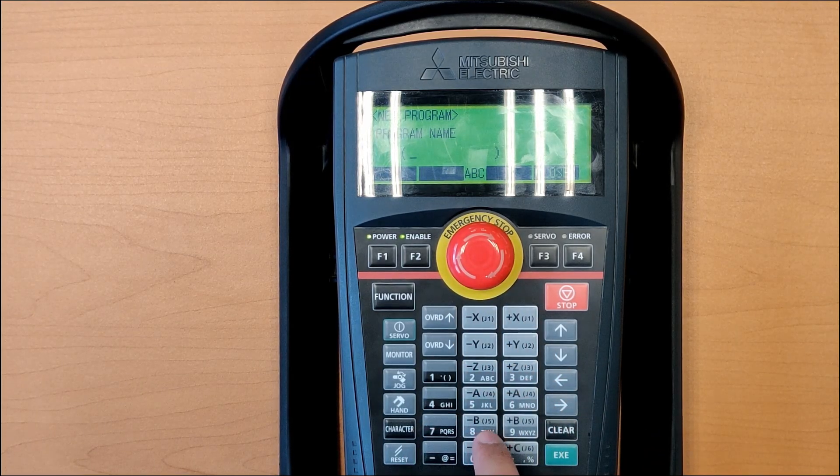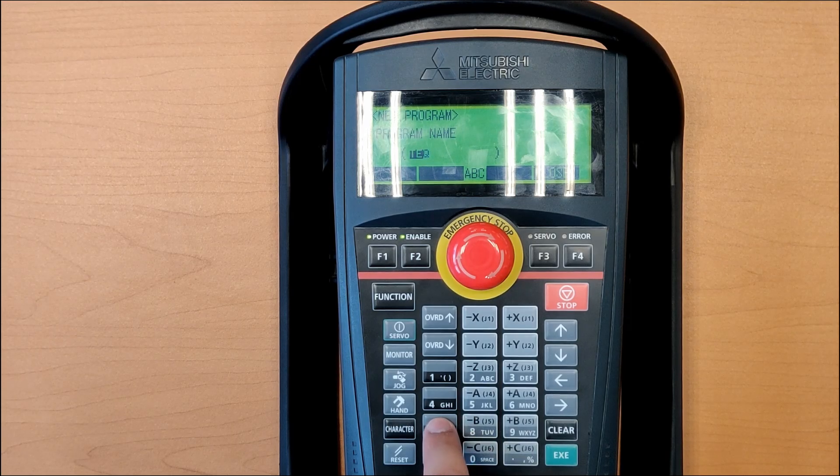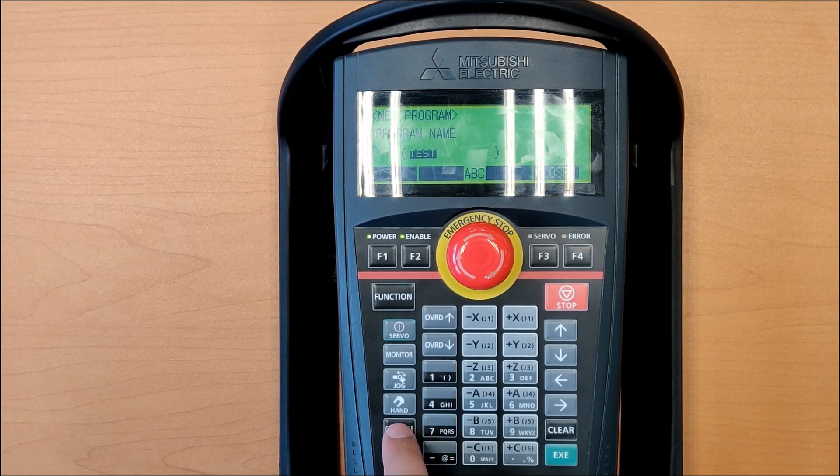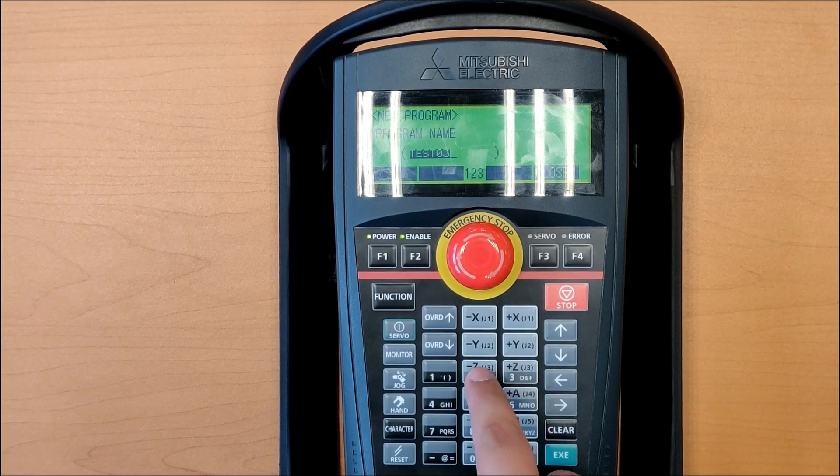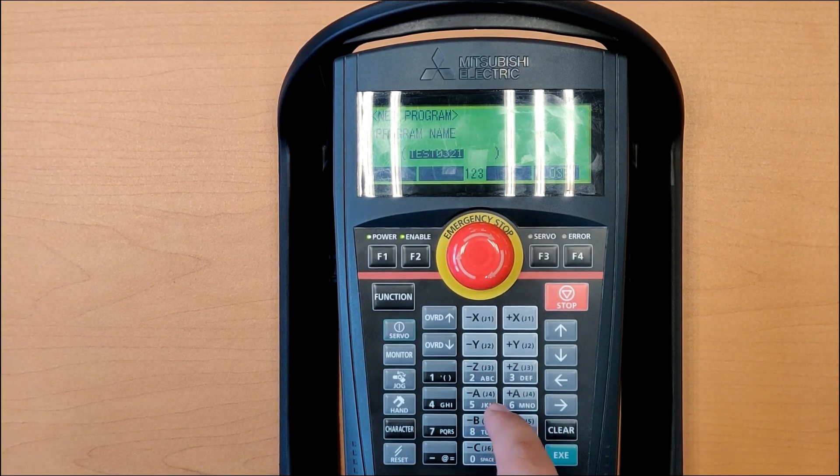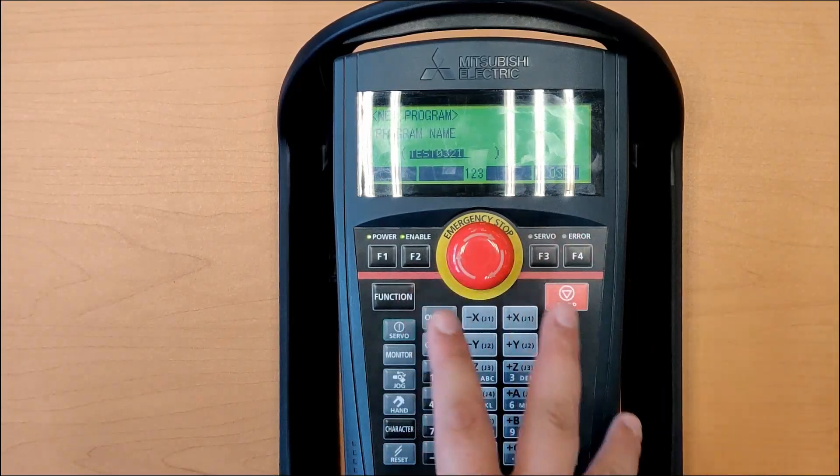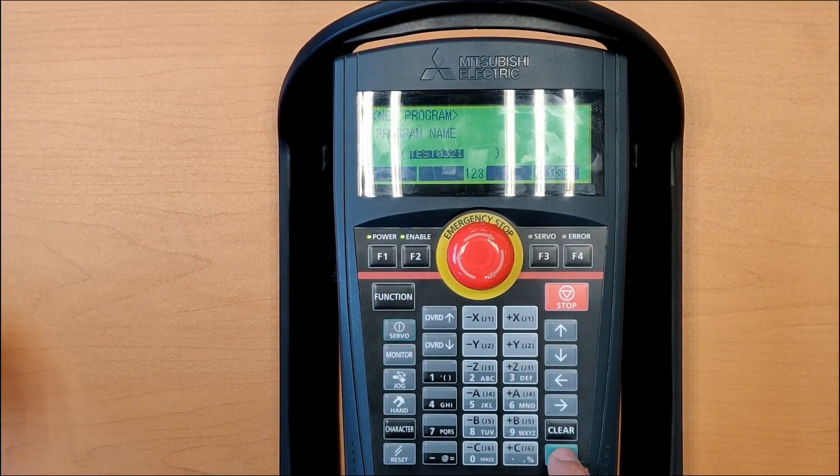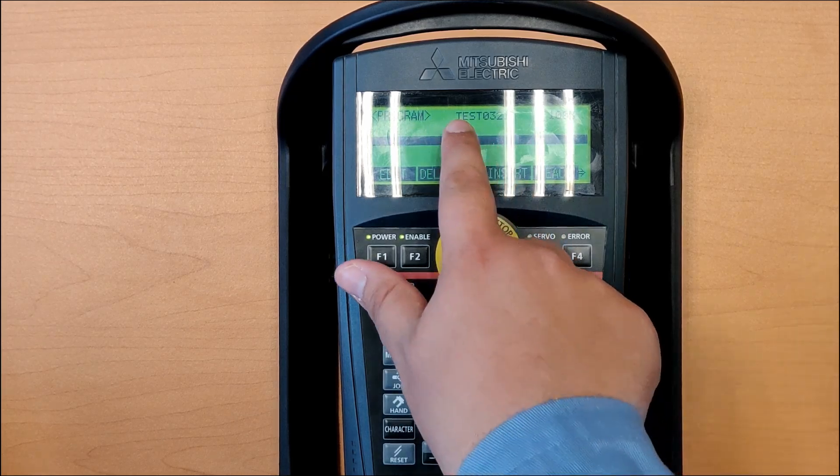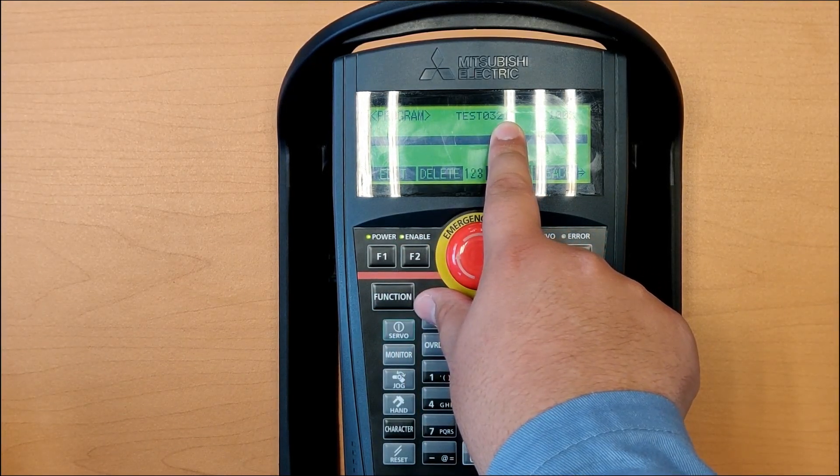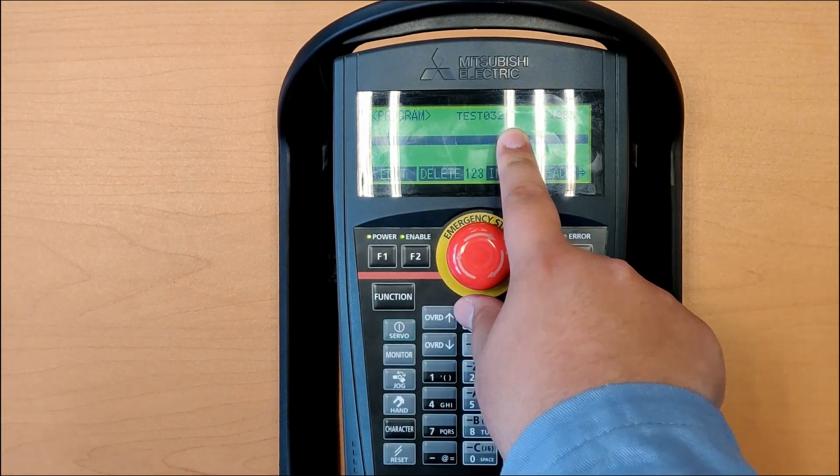Let's put a name, we are going to name this as Test. And I am going to put the date, 0321. This way, I know that there will be another program that is called the same. I am going to click Exit. And now I have my program created called Test0321.